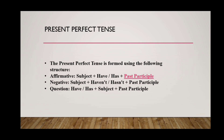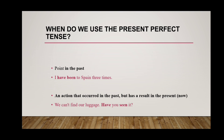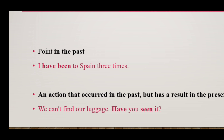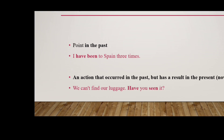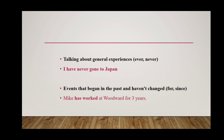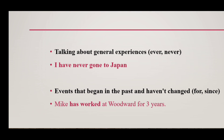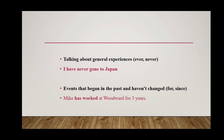When do we use the present perfect tense? We use it to express anything at any point in the past — for example, 'I have been to Spain three times.' For an action that occurred in the past but has a result now — 'We can't find our luggage. Have you seen it?' For talking about general experiences — 'I have never gone to Japan.' And for events that began in the past and have not changed — 'Mike has worked at Woodward's for three years.'